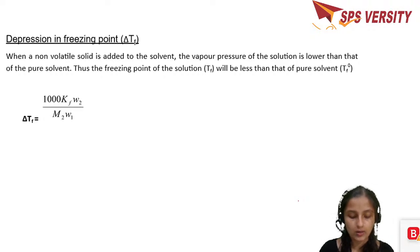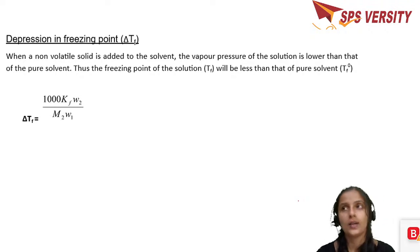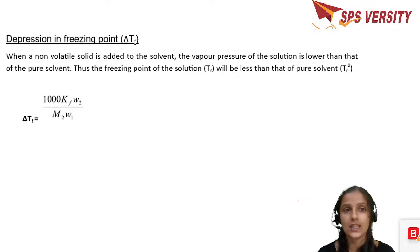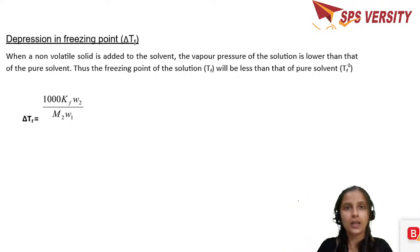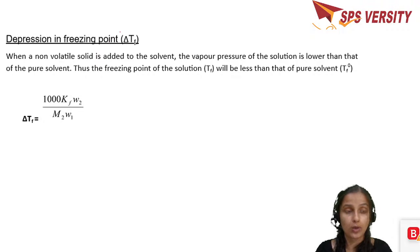Next is depression in freezing point. You may have seen that in snowy regions, substances are added to melt snow, or in older days a salt–ice mixture was used to keep ice cream cold. When a solute is added to a solvent, the freezing point of the solution is lower than that of the pure solvent — this is depression in freezing point.